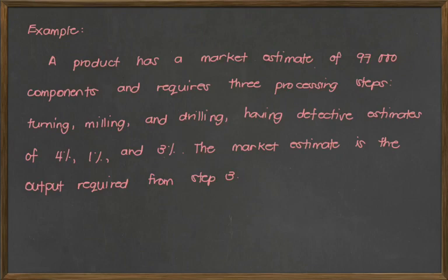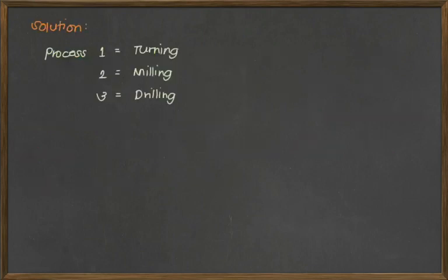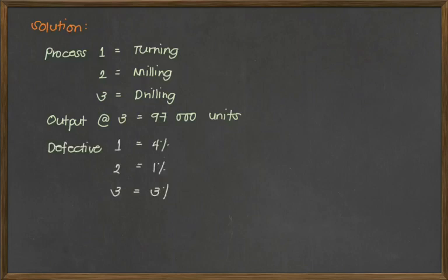Now writing our given information, we have three processes with their respective defective rates. So our output at process 3 is 97,000 units, and then we have the corresponding defective rates for each process. So we want to know what should be the input units in order for us to produce 97,000 good units. So definitely your input should be larger than our output since there's a defect rate involved for each process.